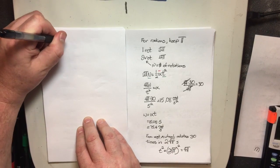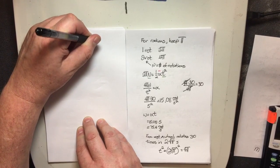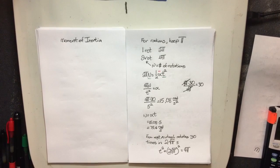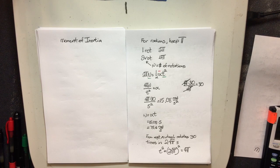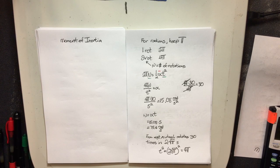Now let's talk about moments of inertia. When you spin a book like this it's easy, but when you spin it on its other axis it's a little bit harder — even though it's the same mass. That's because the rotation point changes, and mass is distributed further from the axis.